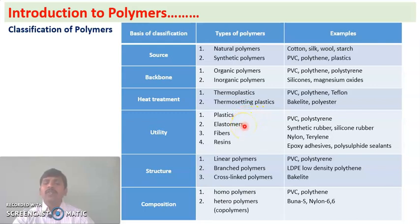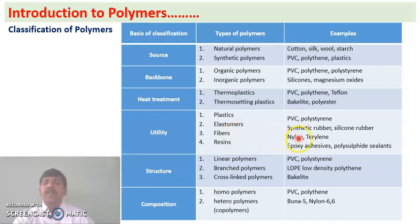Elastomers are rubber-type polymers. Examples are synthetic rubber and silicone rubber. Fibers are filament-like structured polymers. Examples are nylon and terylene.